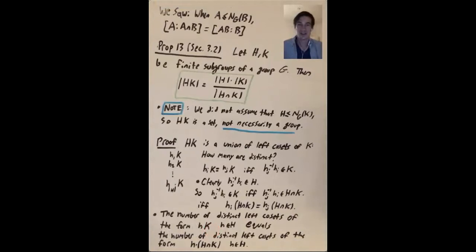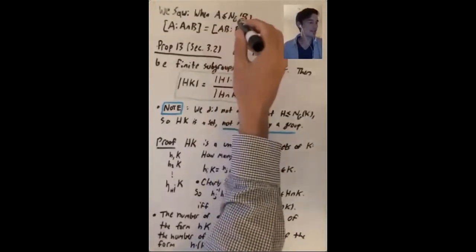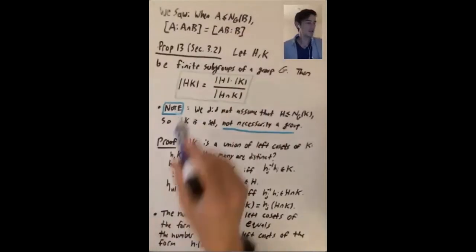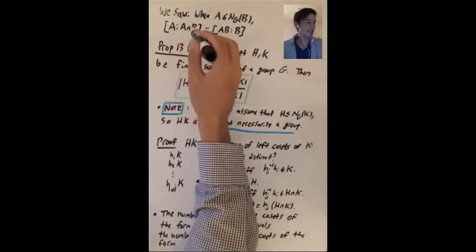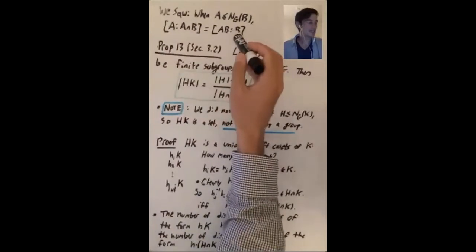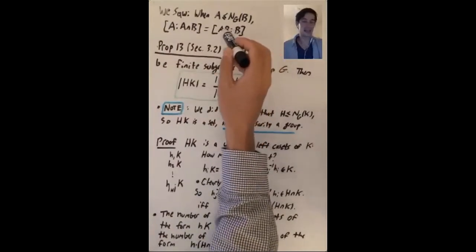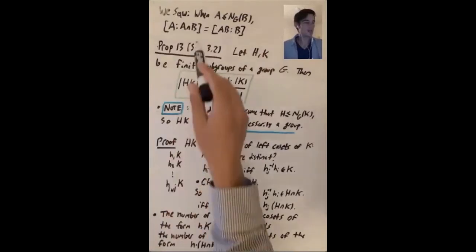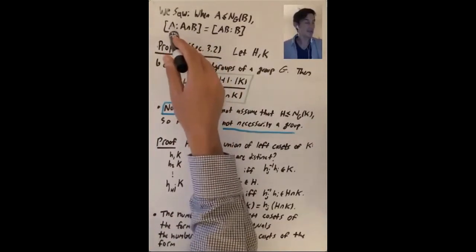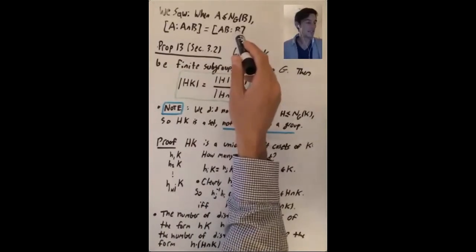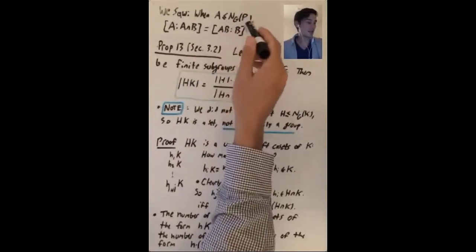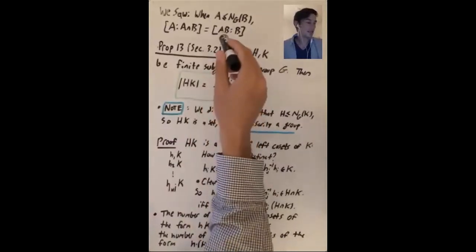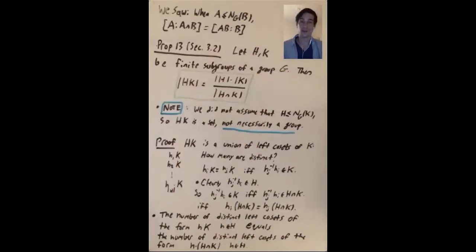In the last video, we saw that if you start with a group G, and you have subgroups A and B, and you assume that A is contained in the normalizer of B, so that the product set AB is a group, then the index of A intersect B inside A is the same as the index of B inside AB. You don't need the A inside the normalizer of B assumption, and you don't need the product set AB to be a group for this statement to be true.